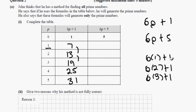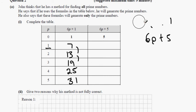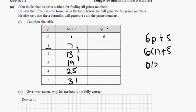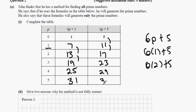For the second formula 6p + 5: 6 times 1 plus 5 gives 11, 6 times 2 plus 5 gives 17. They are going up in 6s, so we have 23, 29 and 35.